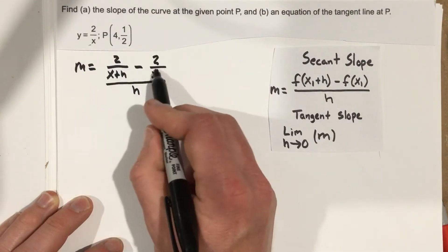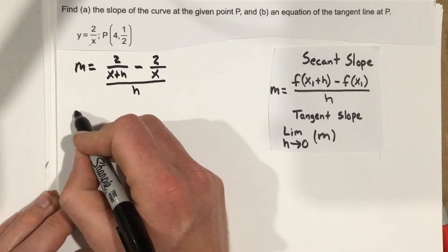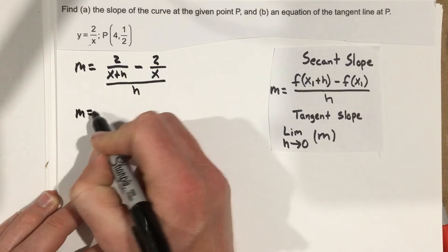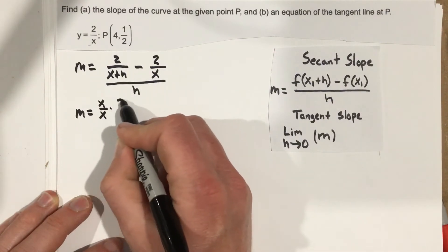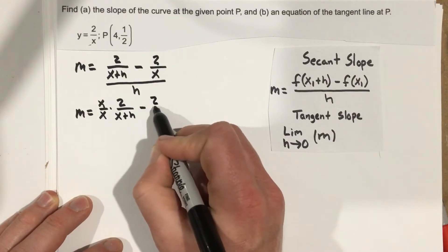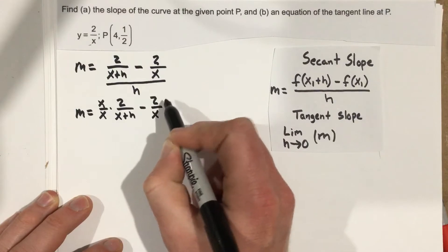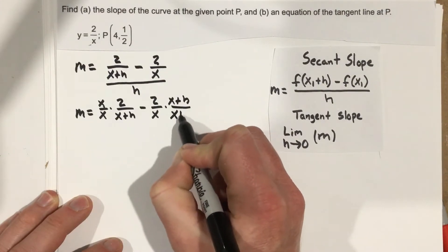I'm going to find a common denominator here on top. And when I do that, I'm going to end up with m equals, I'm going to multiply by x over x to the first one, and then multiply by x plus h over x plus h on the second one so they get the same denominator.